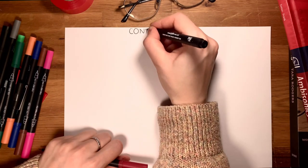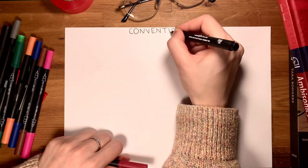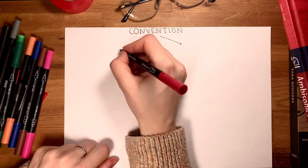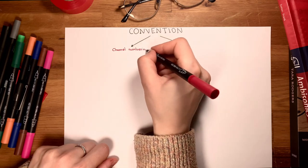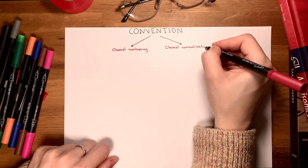For a successful exchange of ambisonics files, the sender and receiver have to agree on the convention, ordering, and normalization methods of audio channels. That's because in ambisonics, the decoder convention must match the encoder convention.